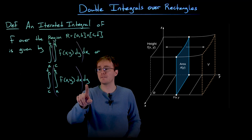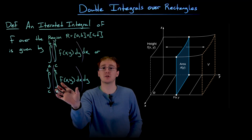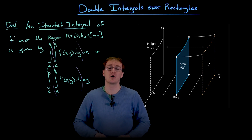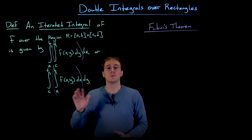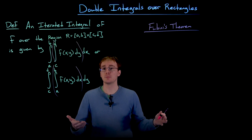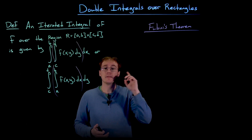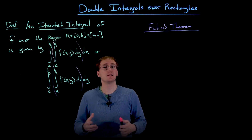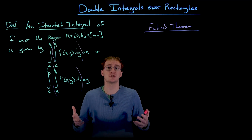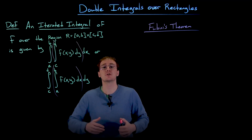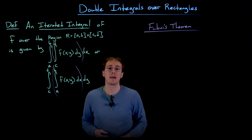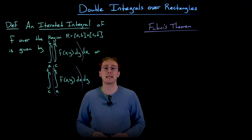We fix a y value, find that cross-sectional area by integrating with respect to x, and repeat for all y values in our region. These iterated integrals represent a different way of slicing up the volume. The next theorem says that this approach is legitimate and equivalent to the first, and also that the order of integration doesn't matter, especially when working with rectangular regions.